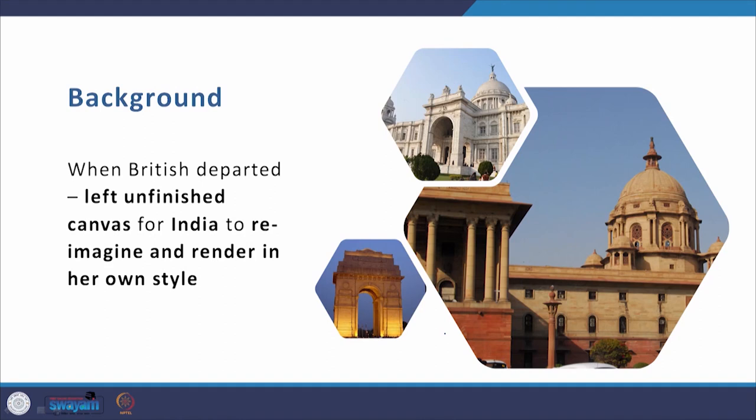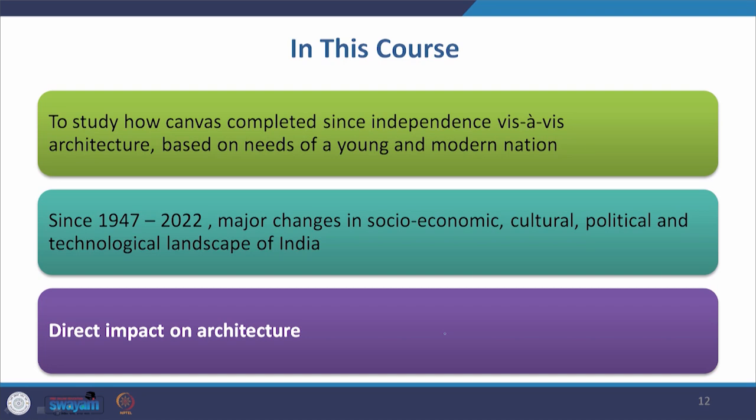When the British departed from India, they left behind an unfinished canvas — as John Lang says — for India to reimagine and render herself in her own style. Up till independence, the British had been painting this canvas, and there is some amazing architectural work they left behind. But the canvas was incomplete, and it was left to independent Indians to complete it. In this course, we are going to study how this canvas was completed — or rather, is being completed — since independence, vis-à-vis architecture based on the needs of a young and modern nation.